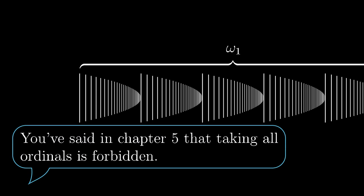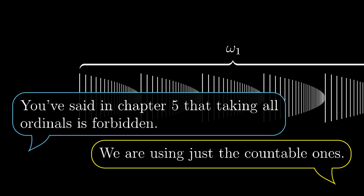In chapter 5, we've mentioned that we are not allowed to take the set of all the ordinals. So, why could we take the set of all the countable ones? Since we don't have the axioms yet, we have to make do with a vague explanation.